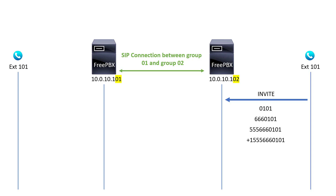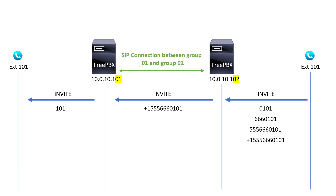No matter which one of these you dial, the local PBX — in this scenario the group two PBX — is going to send over the full number. So if you dial just the four digits 0101, what will be sent over to the other group will be +1-555-666-0101. That remote PBX is going to strip it down and send only the extension, which will ring extension 101. Let's jump in and get these configurations done.